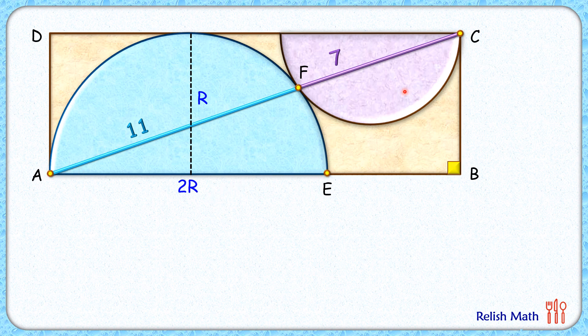And this length CB will be the same as R centimeters. Now let's join this point of contact F and point E. Here, now we know that a diameter always subtends an angle of 90 degrees.